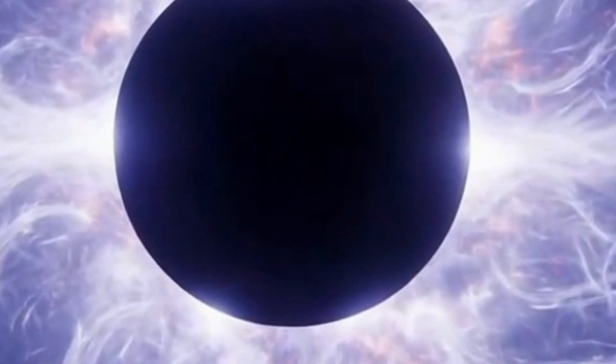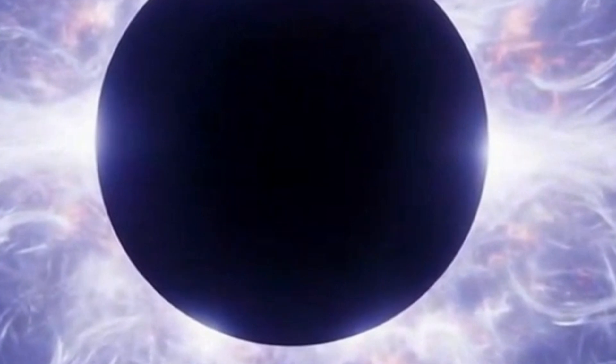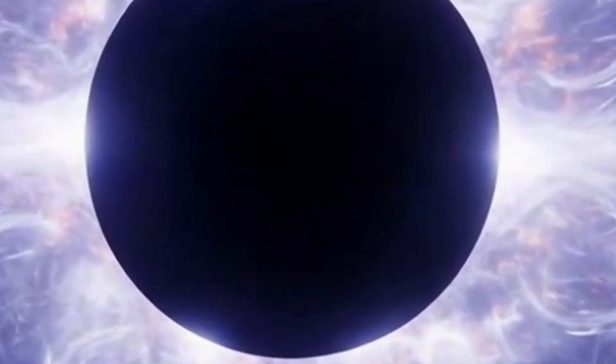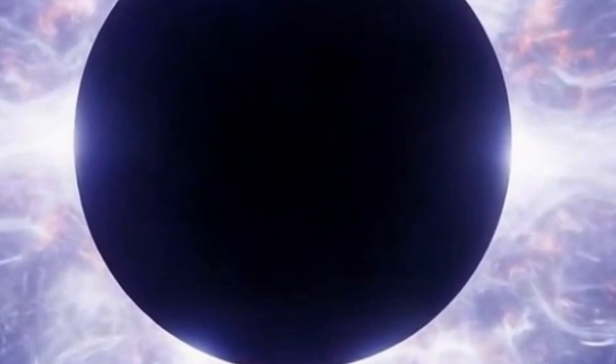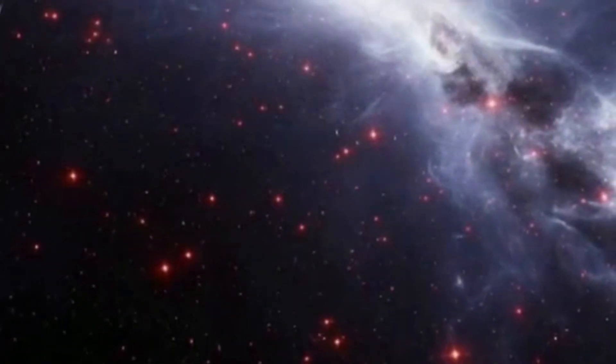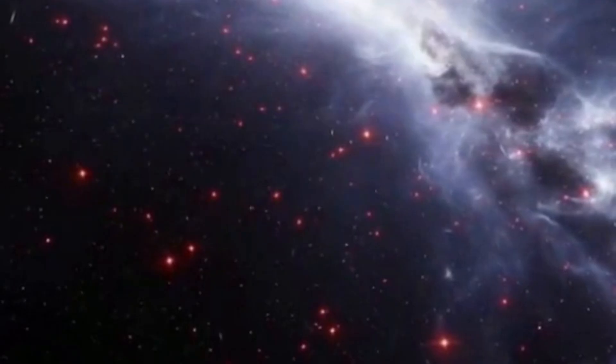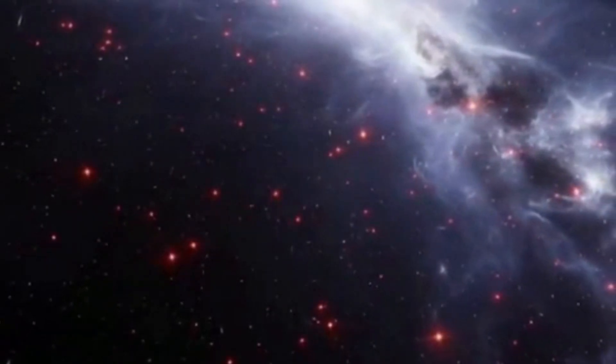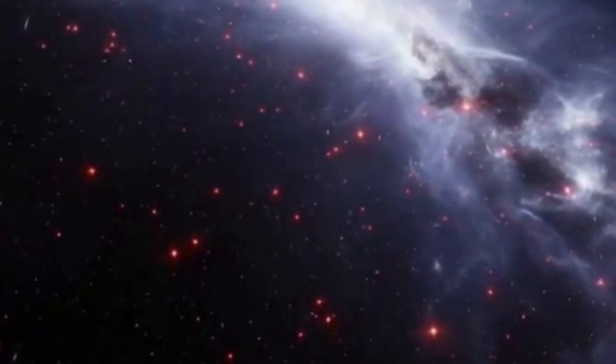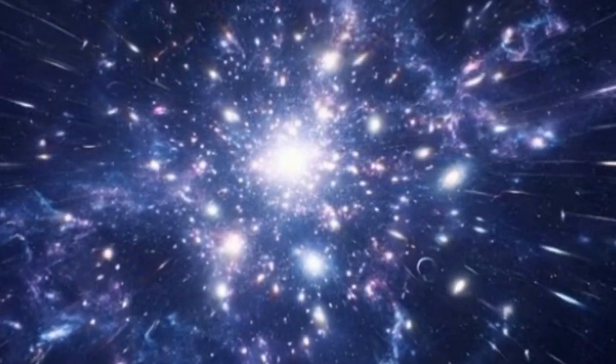Astronomers call this the Hubble sphere, a kind of cosmic horizon beyond which galaxies recede even faster than light itself. Those galaxies are still there, still part of the universe, but their light can never reach us. They're sailing forever beyond our view, carried by the relentless expansion of space. And somewhere beyond that horizon lies the edge of what we can ever know.